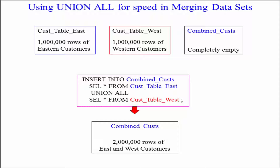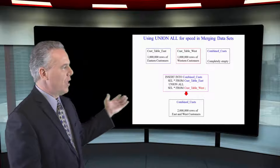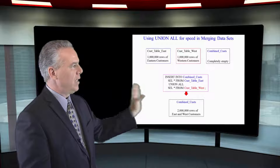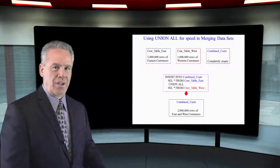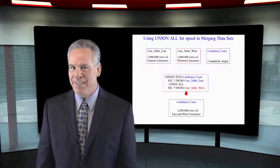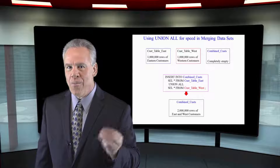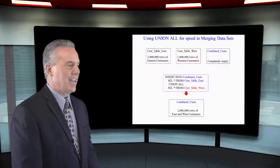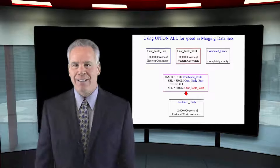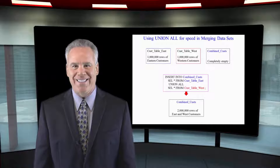So we're going to use the beautiful UNION ALL query so there are no pictures taken whatsoever. To do that, we say: INSERT INTO combined_custs — SELECT everything FROM cust_table_east UNION ALL SELECT everything FROM cust_table_west. No pictures, super fast.